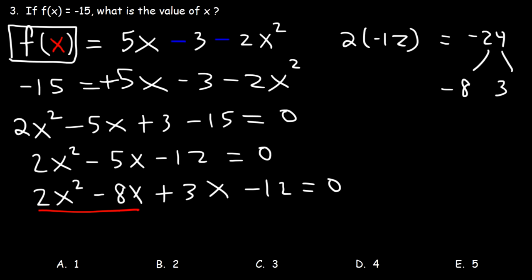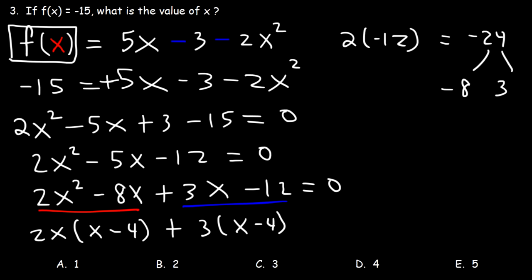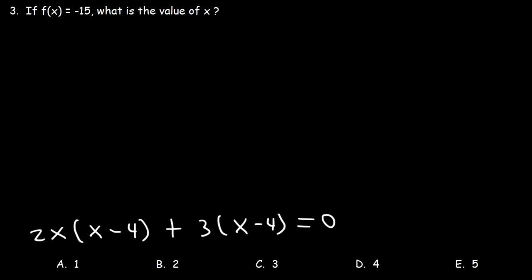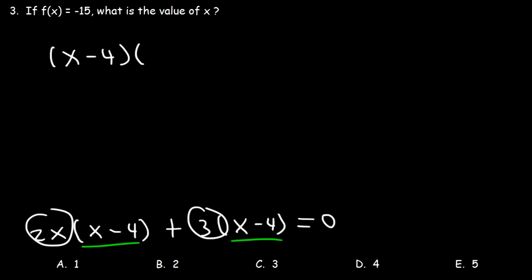Let's take out the GCF in the first two terms, and that's going to be 2x. 2x squared divided by 2x is x; negative 8x divided by 2x is negative 4. And now in the last two terms, let's take out a 3. Now we can factor out the GCF, which is x minus 4. If we take that out, we'll be left with 2x plus 3.